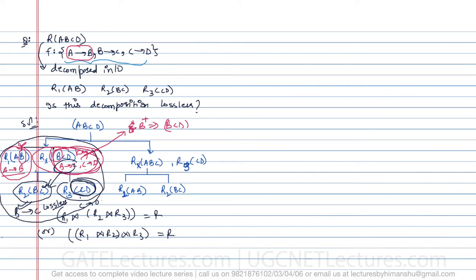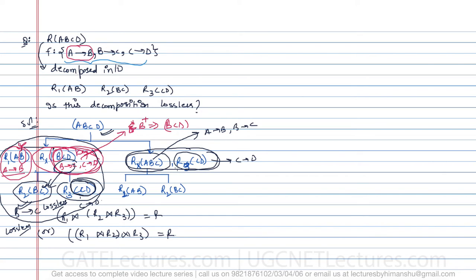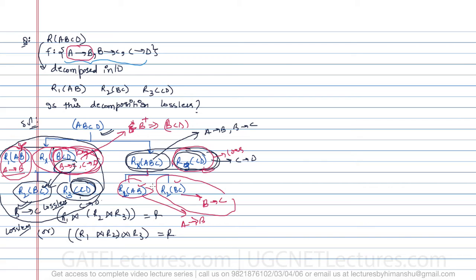For the second way of breaking the relation, R1(A,B,C) and Rx(C,D) share C as the common attribute. C is a key attribute in Rx, so that decomposition is lossless. Further, breaking R1 into R2(A,B) and R3(B,C), the common attribute is B and B is a key in at least one table. Therefore the overall decomposition is lossless.